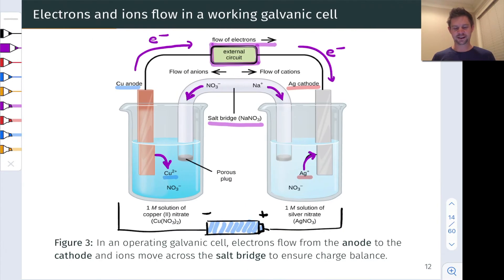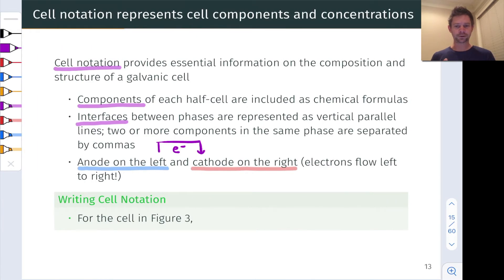Let's return to our galvanic cell involving copper and silver in figure three. If we want to write cell notation for this, we first need to know that the copper half reaction is the anode. We're going to write that first and list the components, typically with the more reduced thing first to show the oxidation process from copper zero to copper two.